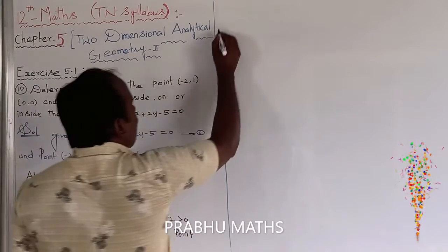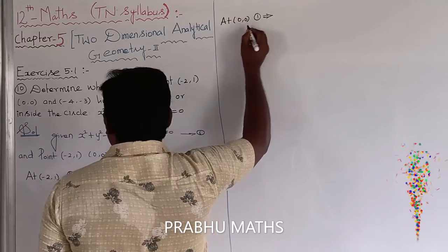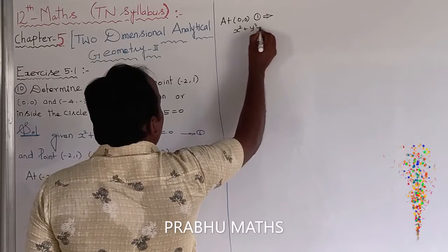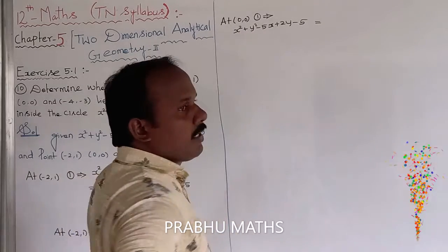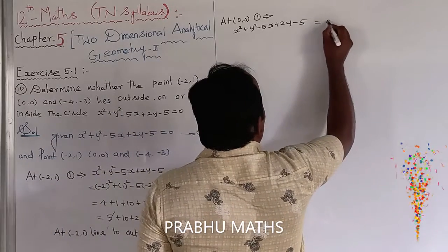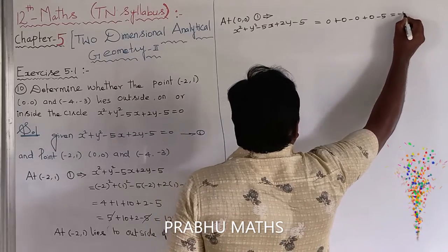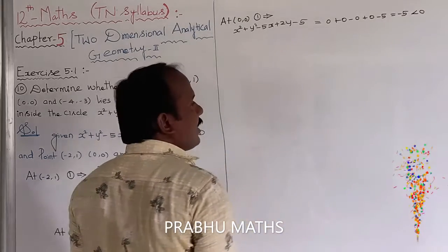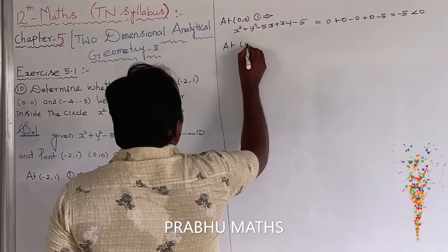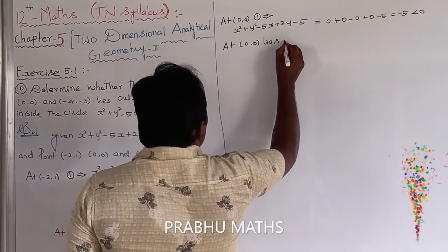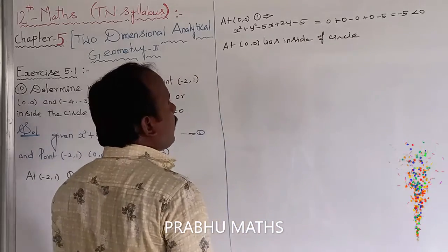Now let us take the second point, 0 comma 0. Equation 1 becomes x squared plus y squared minus 5x plus 2y minus 5, with x replaced by 0 and y replaced by 0: 0 plus 0 minus 0 plus 0 minus 5 equals minus 5. This is less than 0, so less than 0 means inside the circle. At 0 comma 0, the point lies inside the circle.